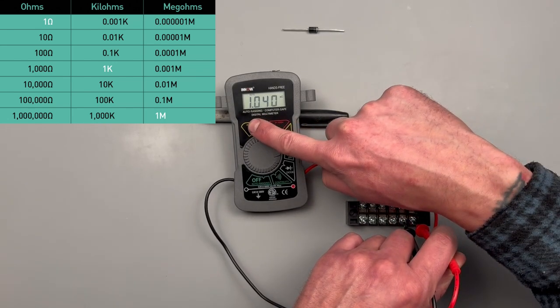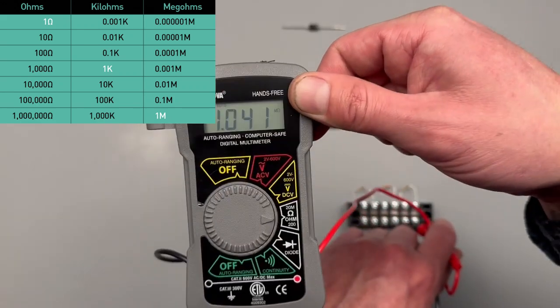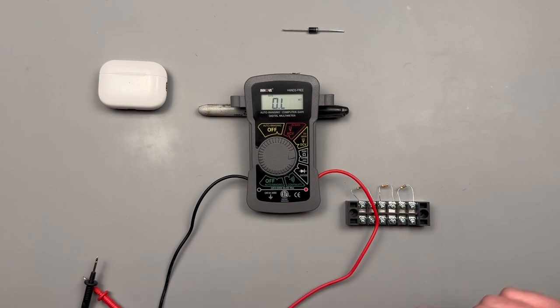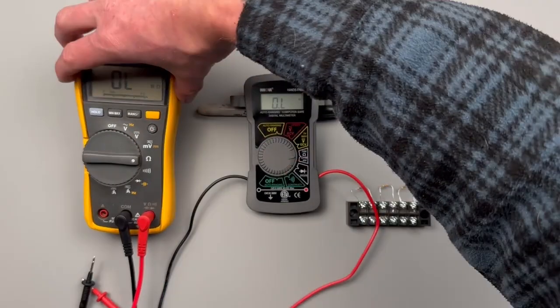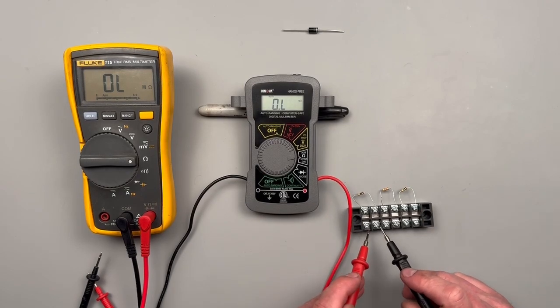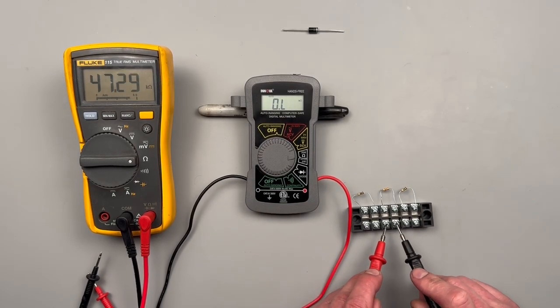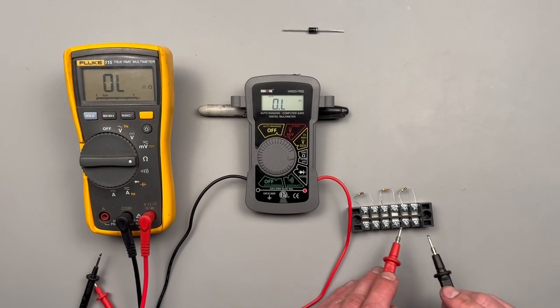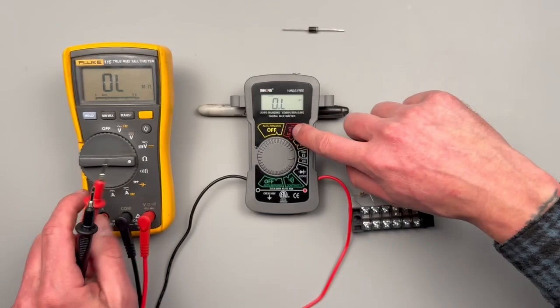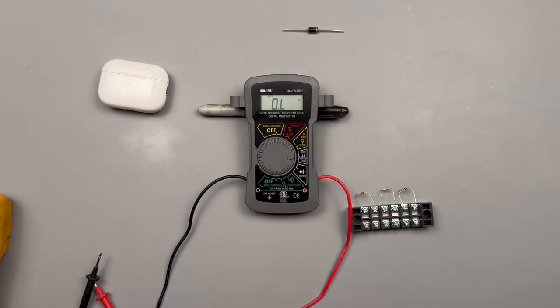This is saying 1.04 mega ohms. Not bad and actually pretty accurate compared to the resistive measurements I took earlier. Let's see with this auto-ranging meter as well - same 10 right on the money, 47.29 kilo ohms, and 1.04 mega ohms. This little meter came back pretty accurate.